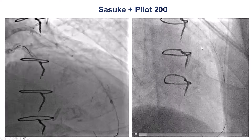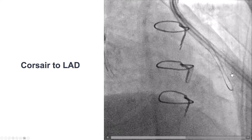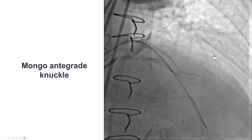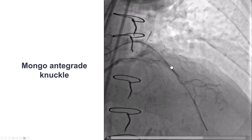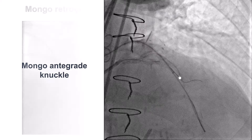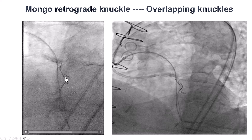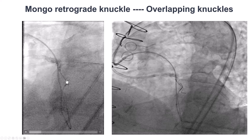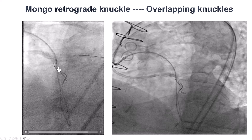The wire goes retrograde. We advanced the Pilot 200 enough to allow us to advance a retrograde Corsair microcatheter next to the distal cap. We then performed antegrade dissection, using a Mongo guidewire that knuckled into the occlusion. We used the antegrade knuckle as a marker to advance a retrograde wire — a retrograde Mongo — and now we have overlap of the retrograde and antegrade knuckled guidewires.